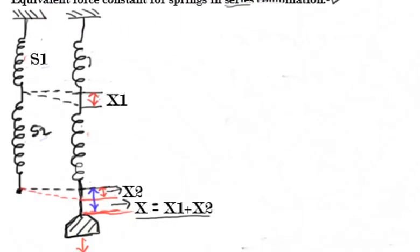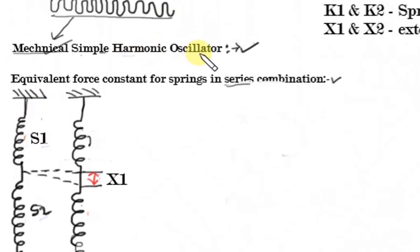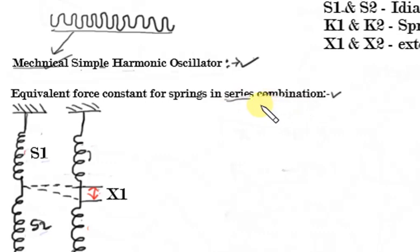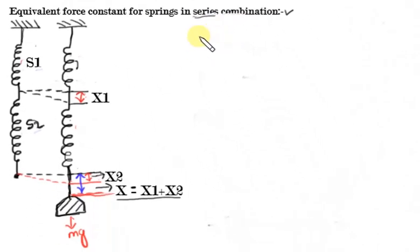Let us see the series combination derivation. A mechanical simple harmonic oscillator example: a mass connected to a spring — when you connect mass to a spring and apply force, it starts vibrating. This is one example of oscillation, a mechanical simple harmonic oscillator. Now, the spring constant series combination derivation will be asked for 4 or 5 marks.